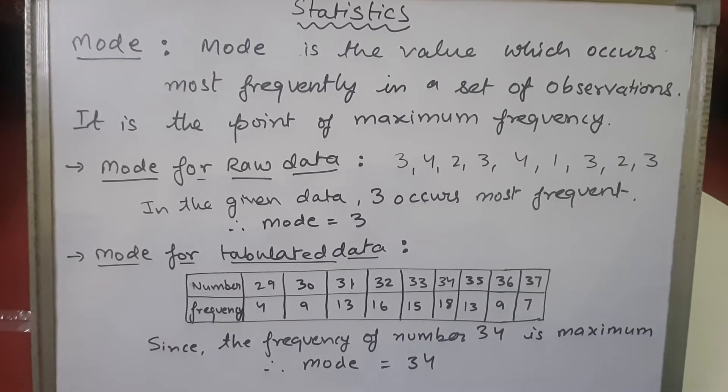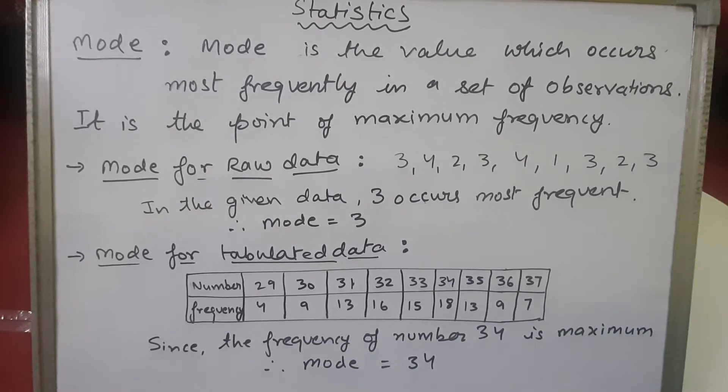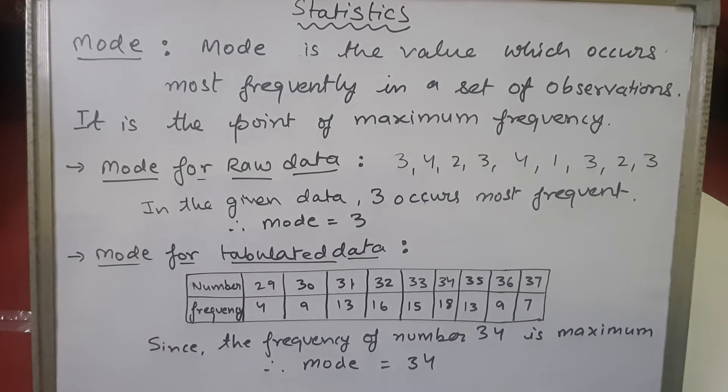Children, in today's class we are going to learn about the mode. What is mode? In general, we know that mode is the maximum number or the most frequently occurring number in the given data. Here it is written that mode is the value which occurs most frequently in a set of observations.